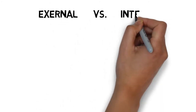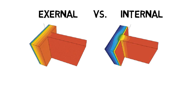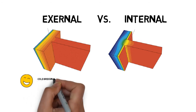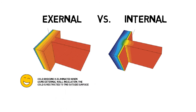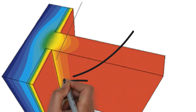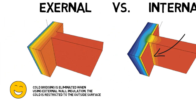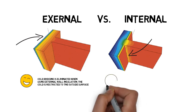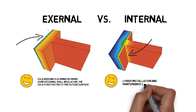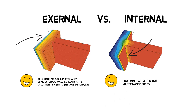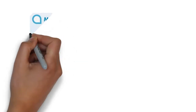Independently of the material, the insulation layer can be placed outside of the wall or on the inside part of the wall — this is the difference between internal and external insulation. Cold bridging can occur at partition walls when using internal wall insulation, but it is eliminated when using external wall insulation, where the cold is restricted to the outside surface. On the other hand, internal insulation has lower installation and maintenance costs, and both are commonly used depending on the climate.